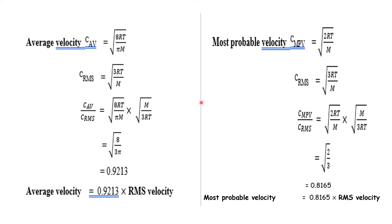The kinetic molecular theory states that gas molecules are continuously moving in random motion. During their motion, different molecules have different velocities, and the molecules keep on colliding with each other. The velocity is used to describe the movement of gas molecules.